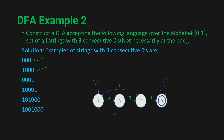Testing '0001': from A, 0 to B, 0 to C, 0 to D, then 1 keeps us in D — D is a final state, so '0001' is accepted. Testing '10001': we get 1 and stay in A, then 0-0-0 takes us to D, then 1 keeps us in D — still a final state, so '10001' is accepted.